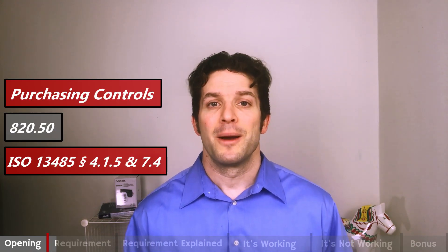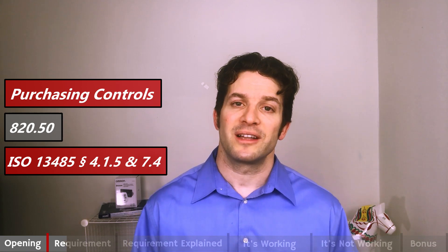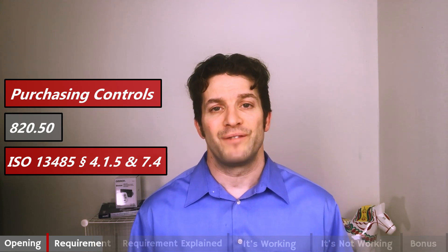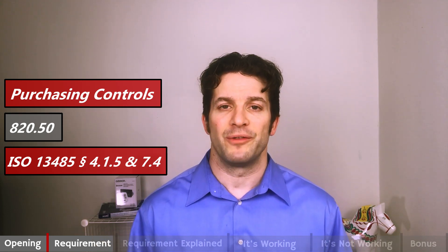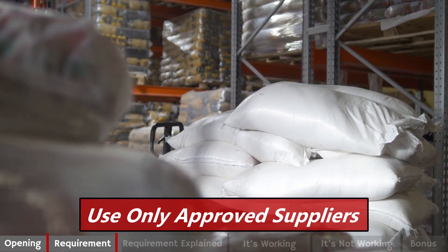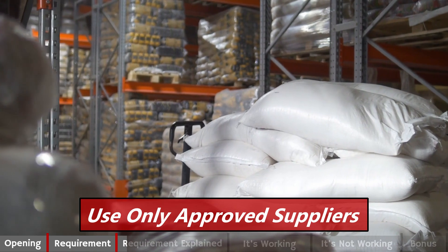Our topic, Purchasing Controls, comes directly from 820.50 and 1345 sections 4.1.5 and 7.4. Purchasing Controls in five words: Use only approved suppliers.